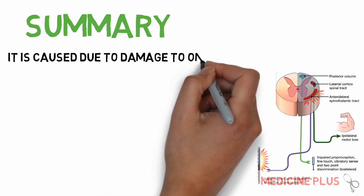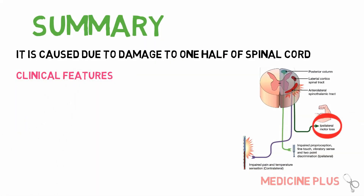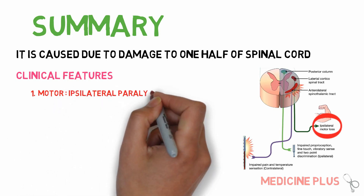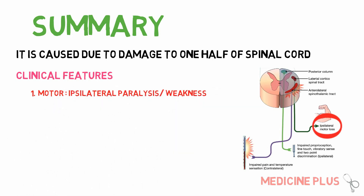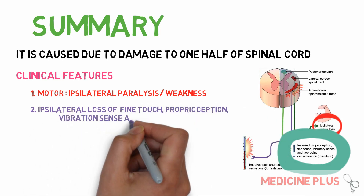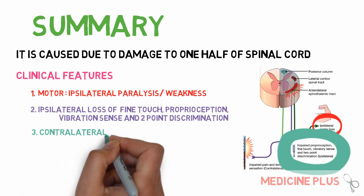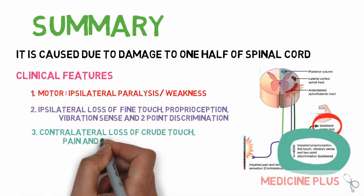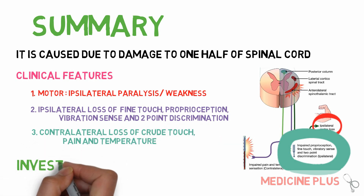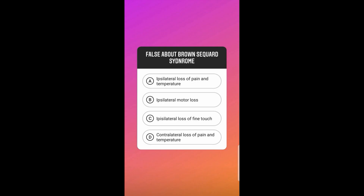To summarize, Brown-Séquard syndrome is caused by damage to one half of the spinal cord. It manifests as ipsilateral paralysis or muscle weakness, ipsilateral loss of fine touch, vibration, and two-point discrimination sensation, and contralateral loss of crude touch, pain, and temperature sensation. The investigation of choice is MRI. Now, back to the MCQ: what is false about Brown-Séquard syndrome?